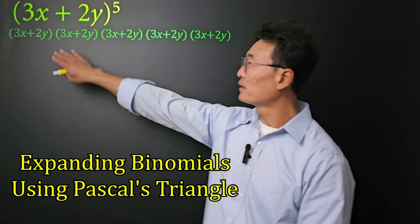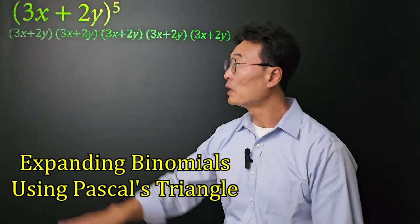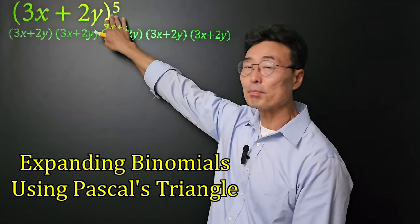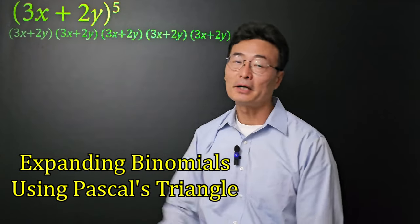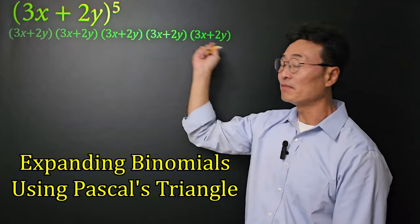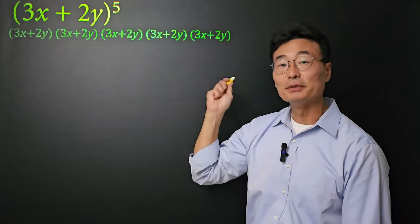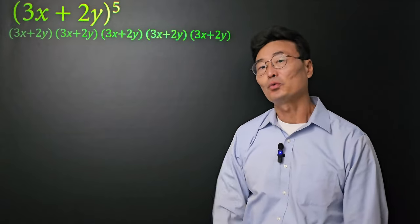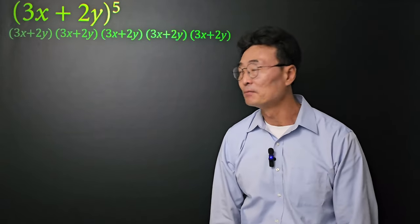In order to take the binomial 3x plus 2y to the fifth power, you'd have to multiply 3x plus 2y five times. This could be quite a bit of work. Here's a better way.